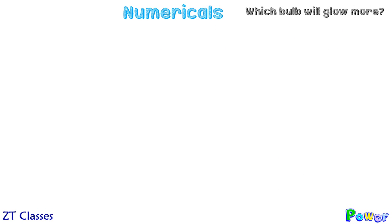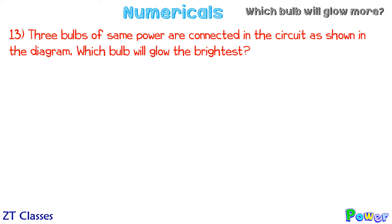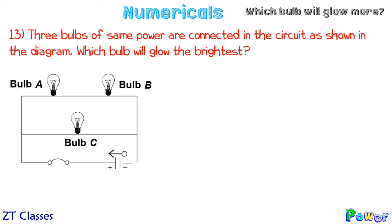Let's take one more numerical to clear the concept better. This time, three bulbs are connected as shown in the circuit — two bulbs connected in series and a third bulb connected in parallel with them. All three have the same ratings. You have to find which bulb will glow the brightest. Since all three have the same rating, the one with the greater potential difference across it will glow more.